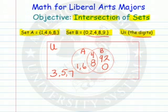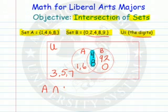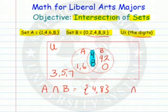Now the intersection of these two sets is the part they have in common — they are in both A and B. "And" is the big word here. So 4 and 8 are considered the intersection of the two sets. The symbol for intersection is an upside-down U. The intersection of A and B equals the set of 4 and 8. The key word with intersection is that it is what is in both — it's got to be in A and in B.